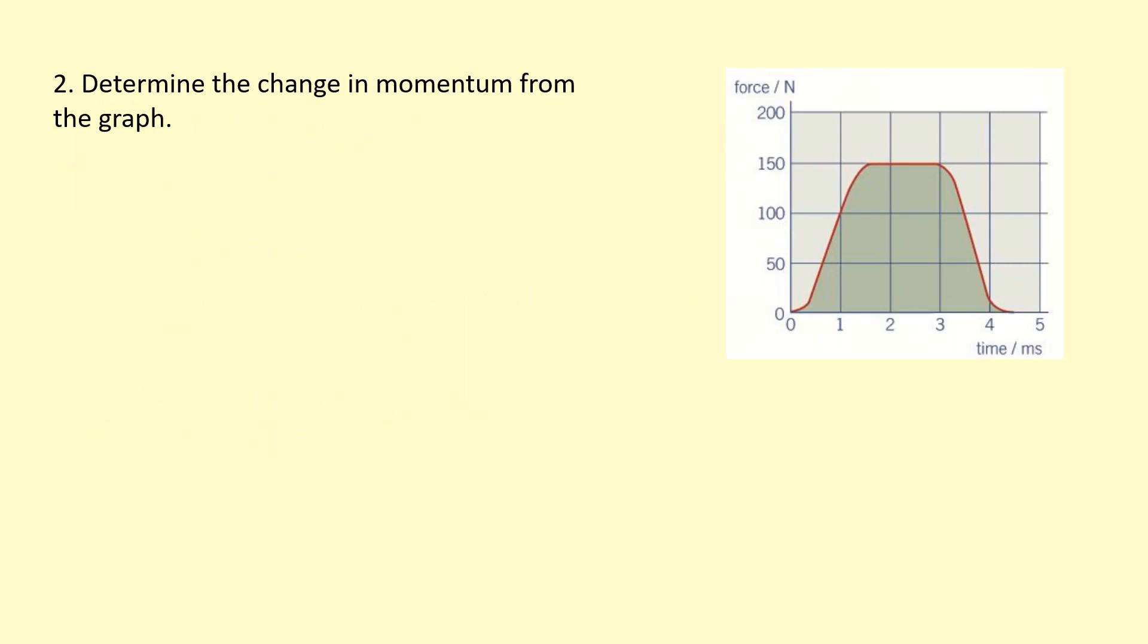Determine the change in momentum from the graph. In other words, again, we're just working out the impulse, which is the area under this graph. So firstly, I'm going to start off by figuring out what each of those squares is equal to. So each square is 50 newton by 1 milliseconds. So note, this is in milliseconds. So 50 times 1 times 10^-3 gives me 5×10^-2 newton seconds.